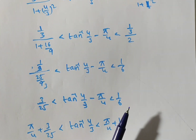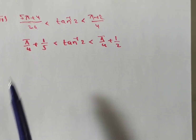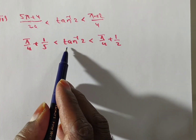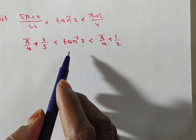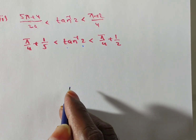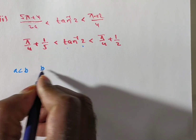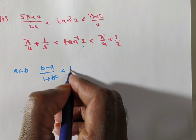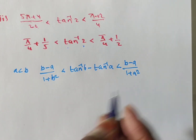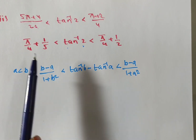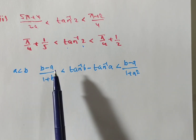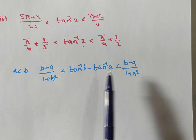Similarly, next we prove the second inequality: pi/4 plus 1/5 is less than tan inverse 2, which is less than pi/4 plus 1/2. Here tan inverse b = tan inverse 2, so b = 2, and a = 1. Sometimes they won't give you the inequality directly — you need to remember the formula: 1 by (1 plus b²) is less than [f(b) minus f(a)] by (b minus a), which is less than 1 by (1 plus a²).